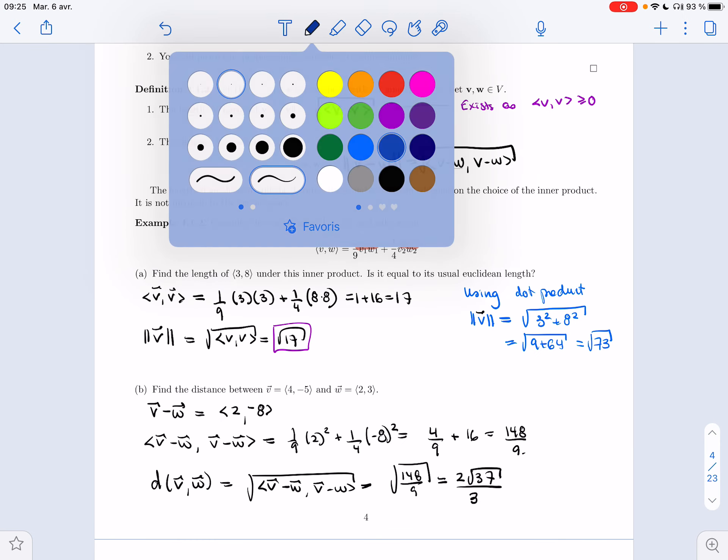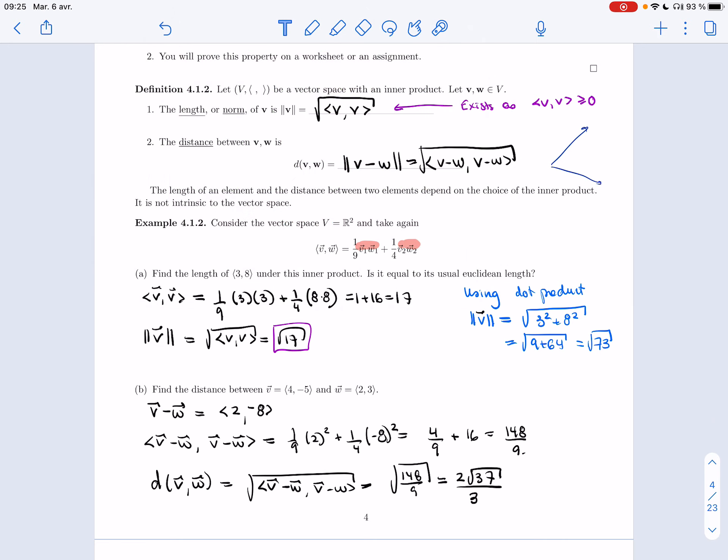So really, to compute the distance between two elements - so this is v and w - you look at the difference between them, so v minus w, and you look at its length. The length depends on the inner product, so the distance will depend on the inner product too.